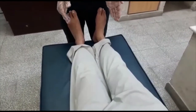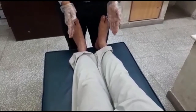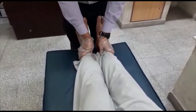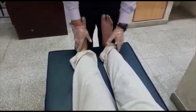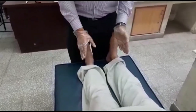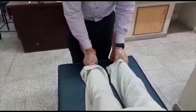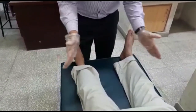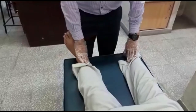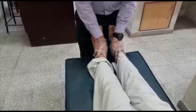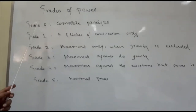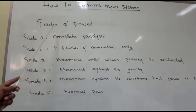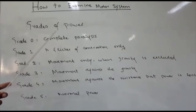Now we start with the abductors of the legs: I take the subject's arms apart but they try to open them. We check the abductors of the legs. These are the grades of power.